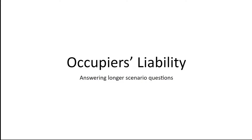Hello and welcome to this video about the Occupier's Liability Act. This follows on from the other videos about the case law surrounding the 1957 and 1984 Acts and is going to focus on longer scenario questions. Remember, the Occupier's Liability Acts can be examined in any part of the AQA A-level paper, including a shorter question — a 5 or 10 mark — which would focus in on one particular area, such as the ability to blame an independent contractor under Section 2.4b of the 1957 Act.